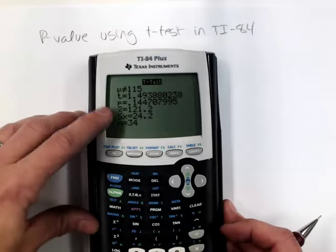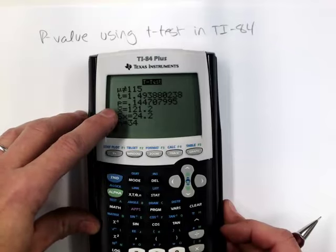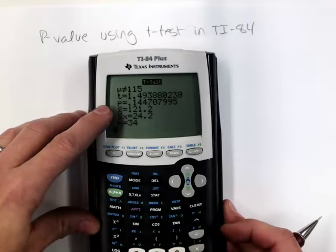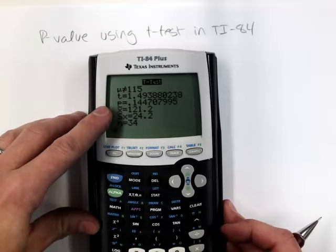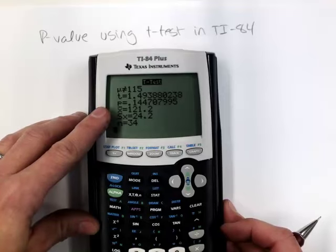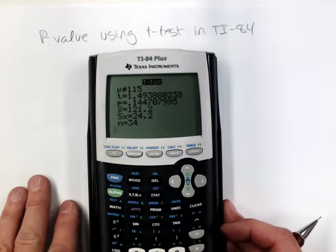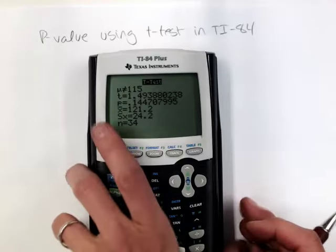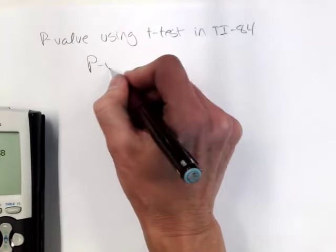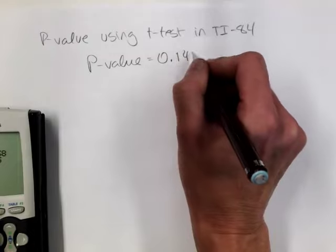Because this is a two-tailed test, the calculator doubles the p-value for you, so the output gives the correct p-value when you input the right alternative. The table is limited — you'd only get a range of values for the p-value, so always use technology to find it. The p-value in this case is 0.1447.